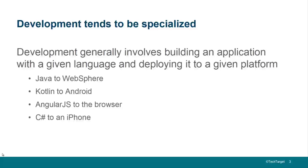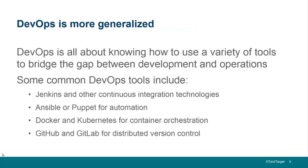So what is development? If you're looking for a development job, quite simply, that usually means a given language and a given deployment platform. So if you're a Java developer, you might be deploying to WebSphere. If you're a Kotlin developer, you might be deploying to Android, AngularJS to the browser, C-sharp to an iPhone. If it's a developer role, you're developing something in a particular language and deploying it to a particular platform.